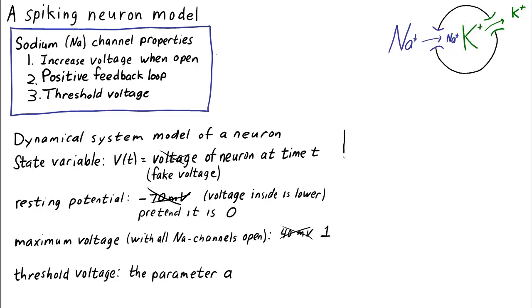To model the influence of the sodium channels on the voltage, here's what we want our model to do. If the voltage is below A, then the voltage should decrease back down to the resting potential zero. However, if the voltage somehow gets kicked above V equals A, then the voltage should increase to 1.